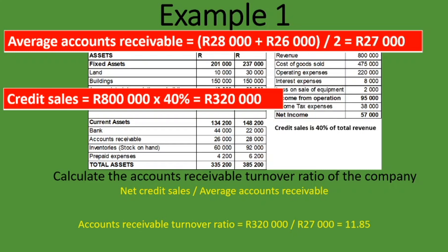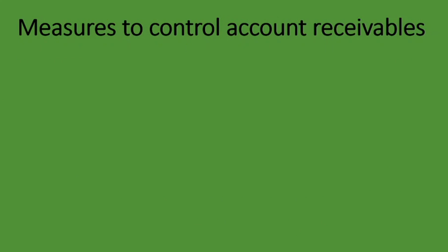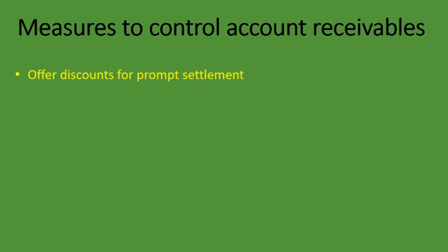If your accounts receivable turnover ratio is too low, here are measures to control your accounts receivable — the same ones mentioned for debtors collection period. These measures are not exhaustive but are generally used. You can offer discounts for prompt payment: tell your debtors that if they pay early, you'll give them a discount of a specific percentage — for instance, if you pay within 15 days, we'll give you a 1% or 2% discount — which will encourage them to pay on time or quickly.